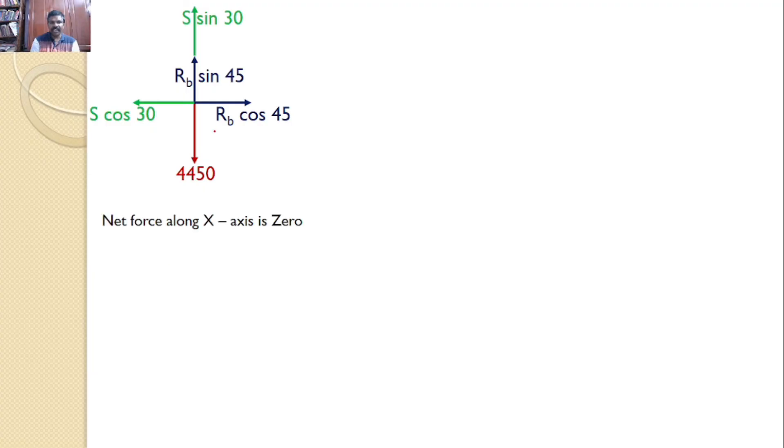Both are acting in the opposite direction. Hence I can say Rb cos 45 is equal to S cos 30. And upon simplification you will get Rb is equal to 1.2247 S.